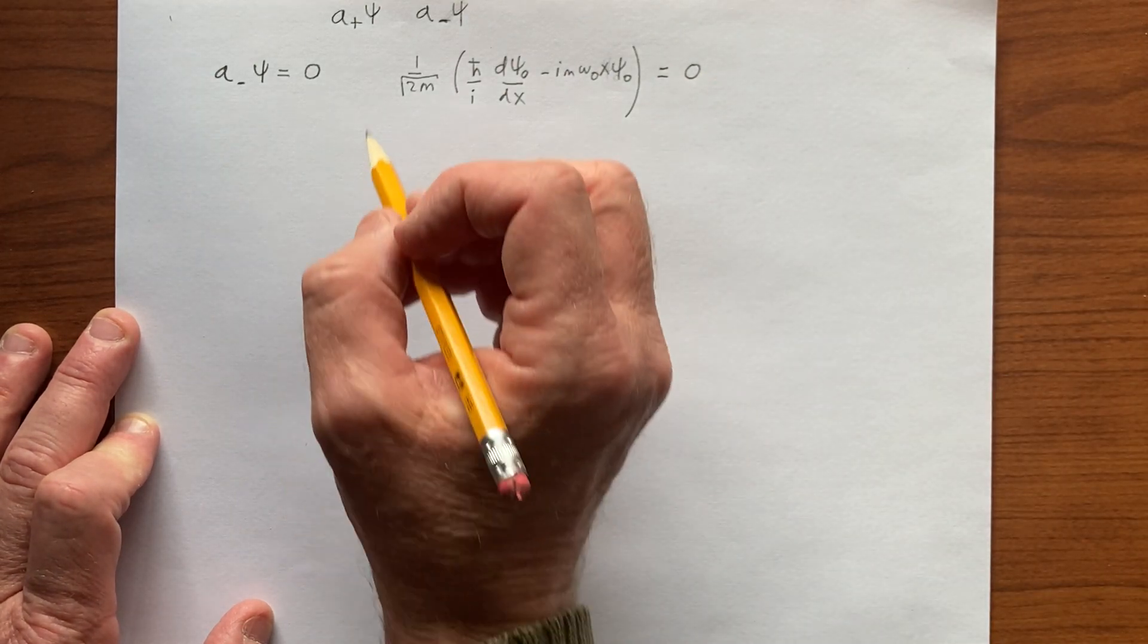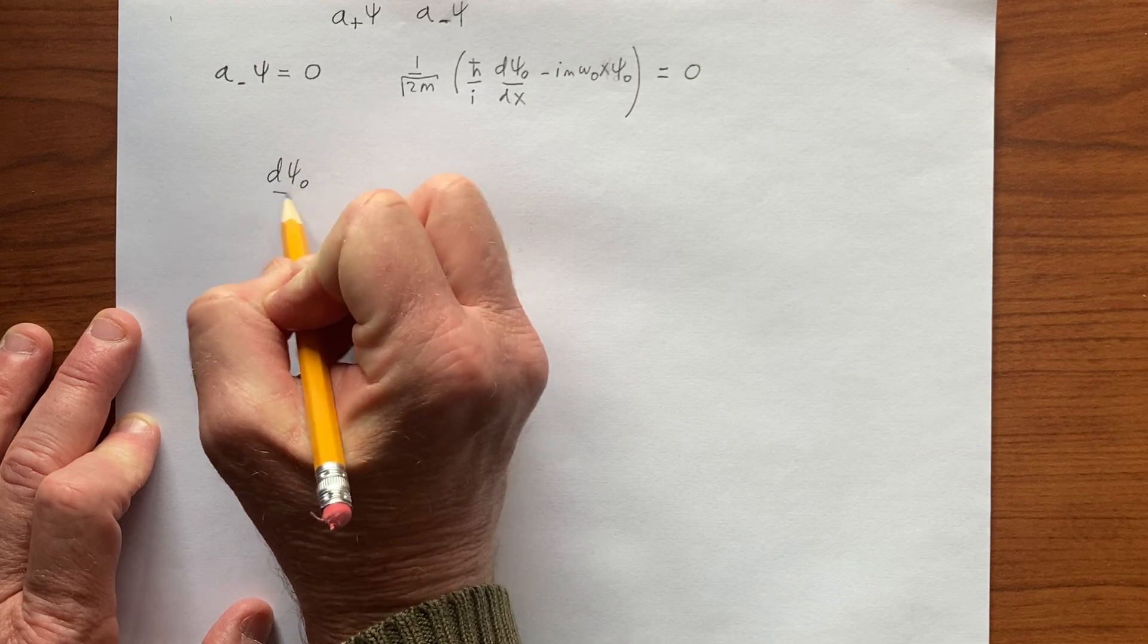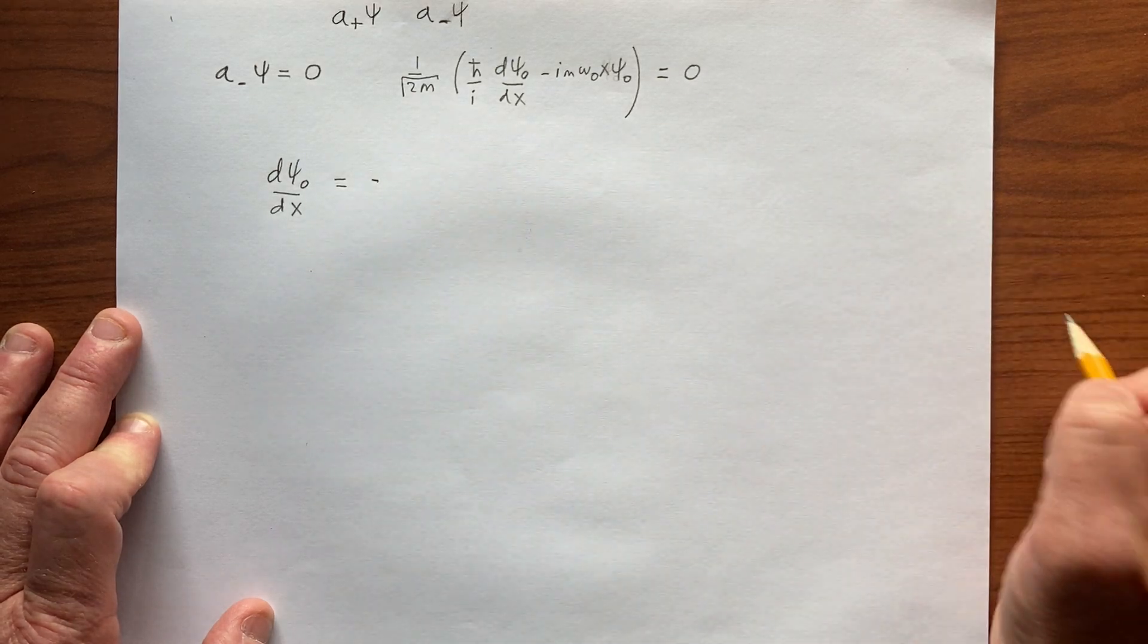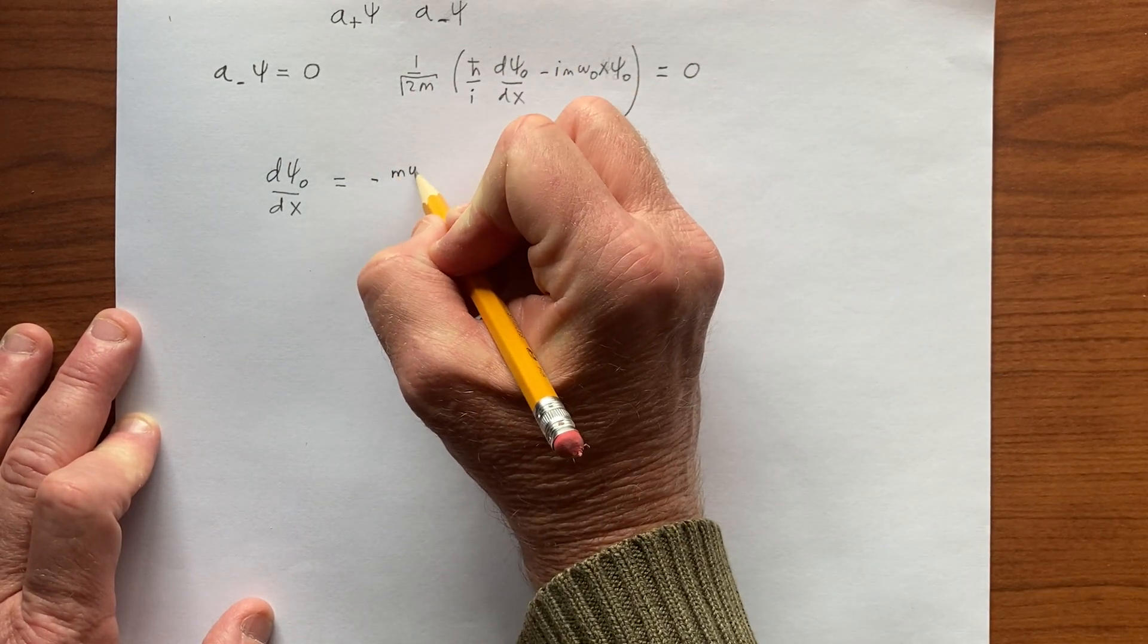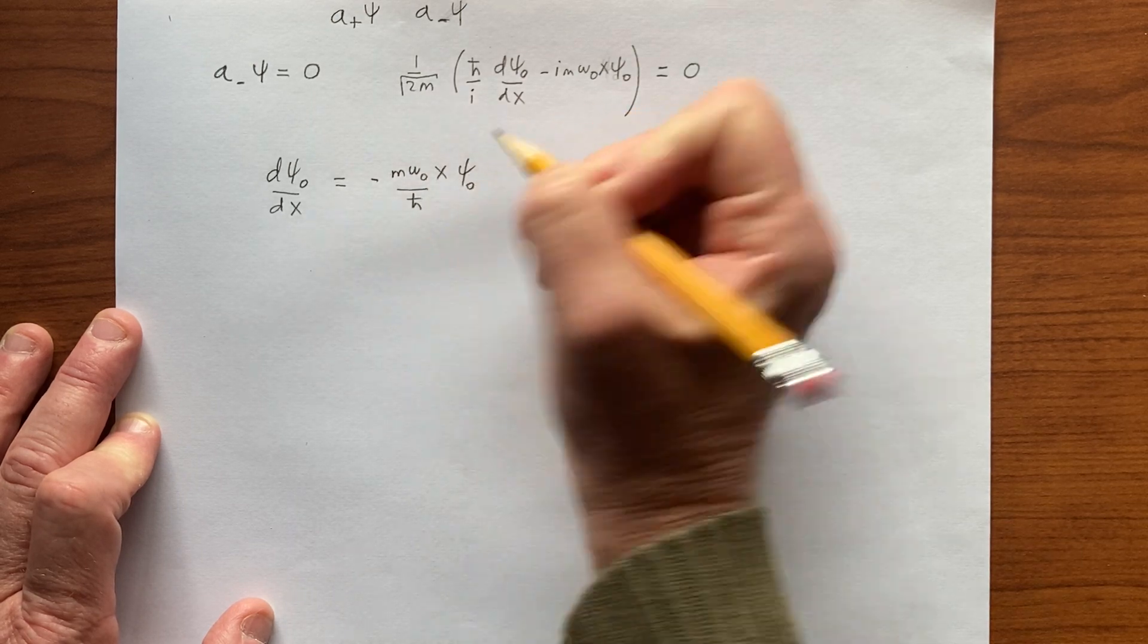And then of course we just rearrange terms, and so this says dψ₀/dx is equal to minus, right, the i's will cancel, m ω₀ x over ℏ, ψ₀.